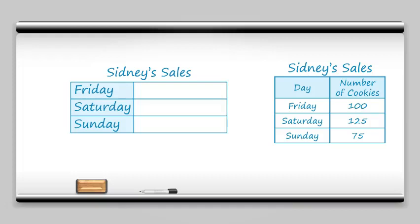So you see in the table that on Friday it says there's 100 cookies. Let's just go ahead and put 100 cookies next to Friday. So here's one, here's two, here's... wait a minute. If I put 100 cookies here, first of all, it's going to take a long time, and it's going to take up a ton of space. So get out of here, cookies!